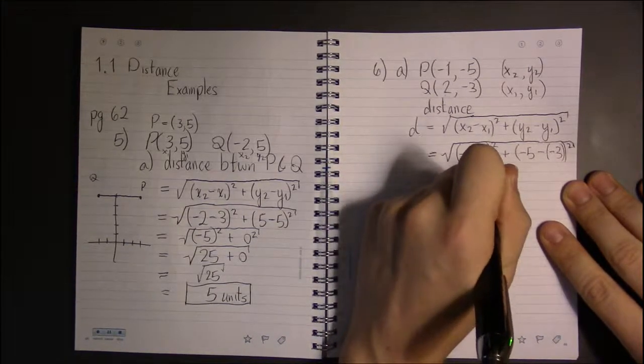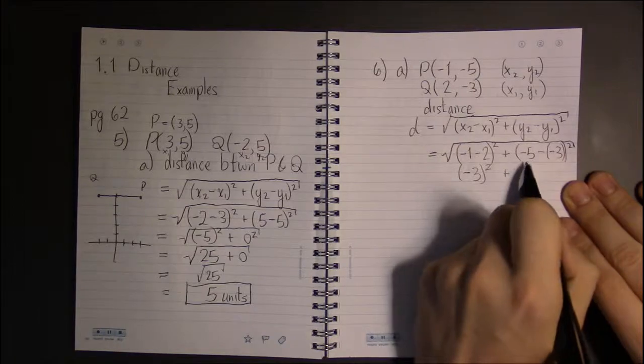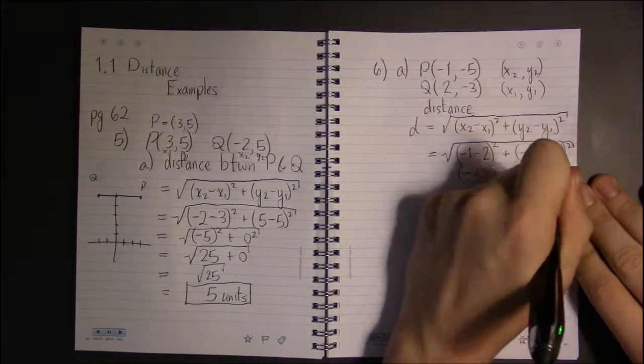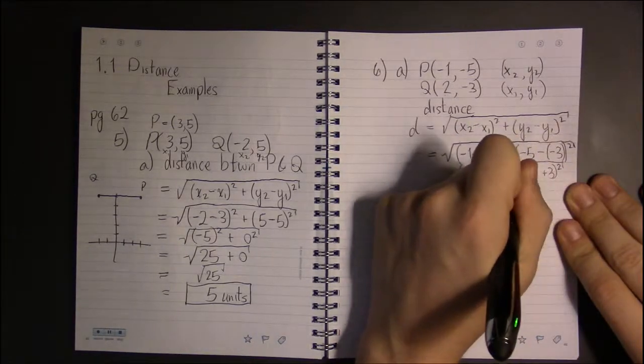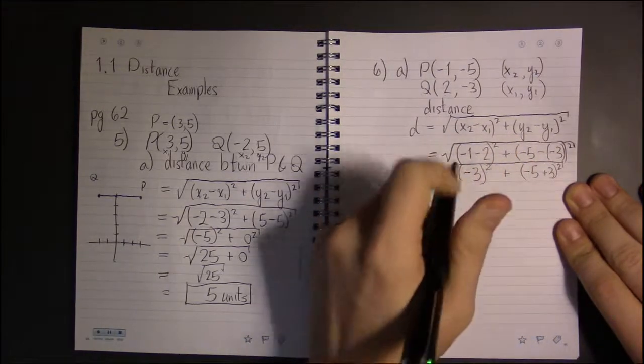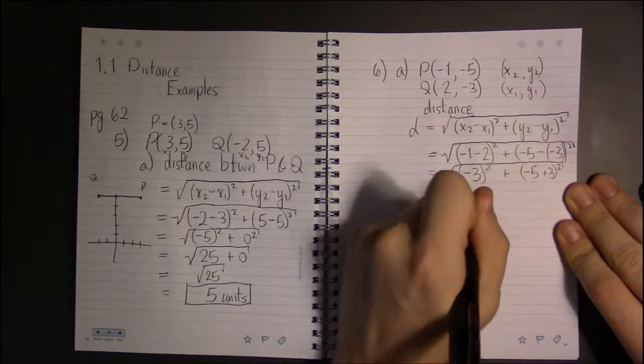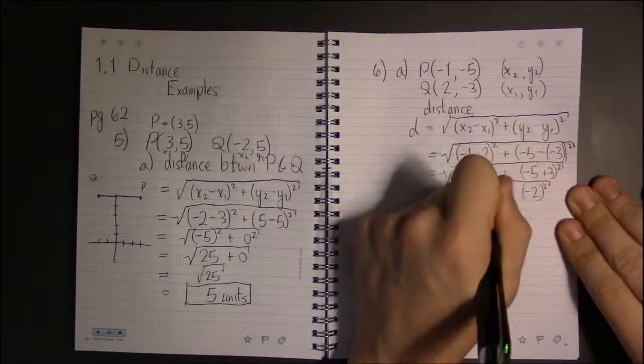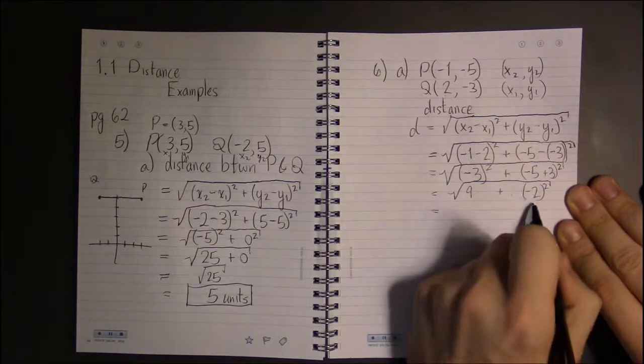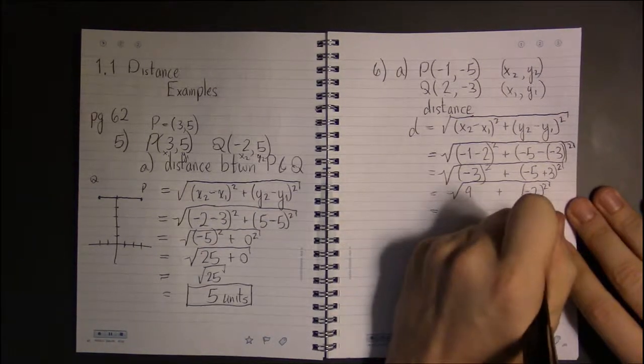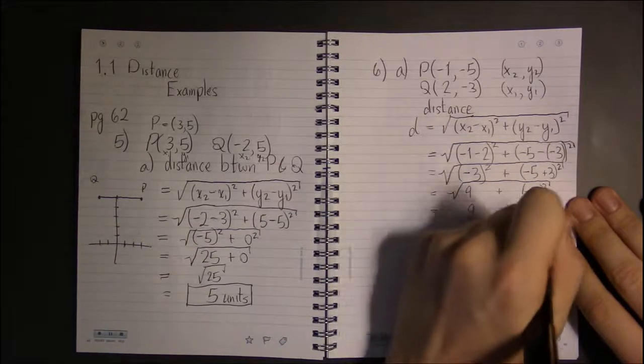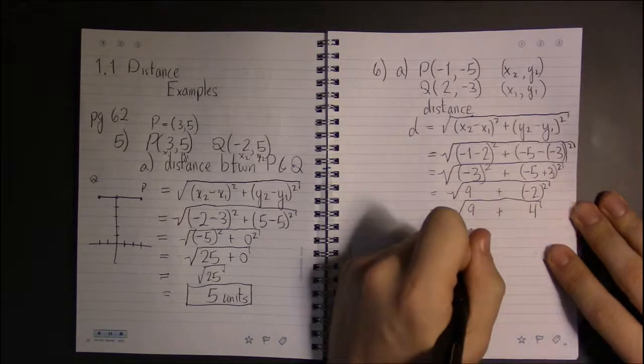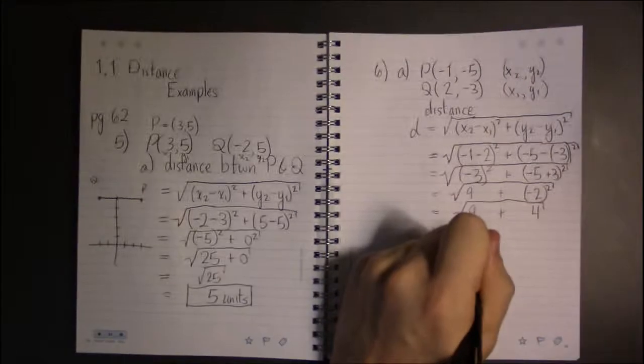-1 minus 2 is -3. This is -5 plus 3, which is going to be a -2. And -2 squared is -2 times -2, which is a positive 4. And 9 plus 4 is 13.